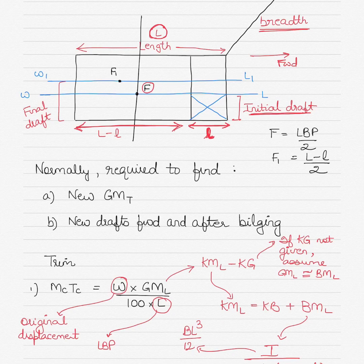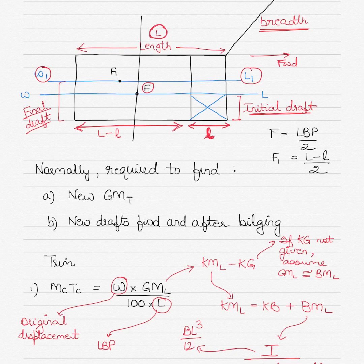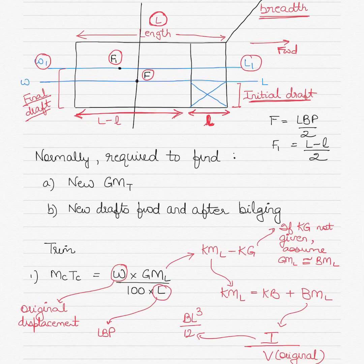As the bilging takes place and water starts to ingress into this compartment, the water line will shift and become W1 L1, which will also result in an increase of the final draft. The final draft will definitely be more than the initial draft because as water starts to get into the ship, the ship will start to sink. Also, because the forward part of the vessel starts to take in water, the trim will change — the forward part will become heavier and as a result the center of flotation will also change, depending on the amount of water going in and the location of the compartment.